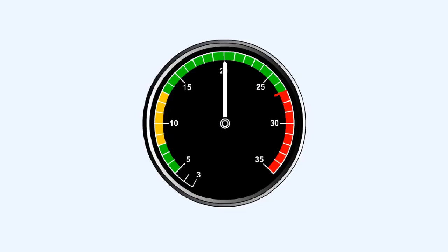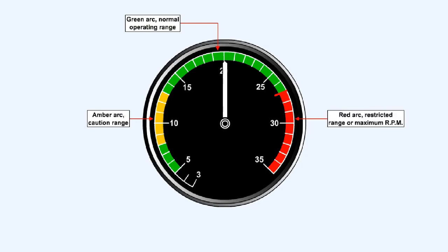In line with other instruments, colored arcs or indicator lines are used to show ranges and limits of engine speed. A green arc will represent the normal operating range, and an amber arc will denote a caution range. Red arcs show either the maximum speed of the engine or RPM ranges which are restricted, perhaps because vibration may be encountered within them.